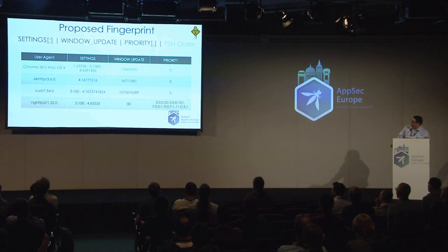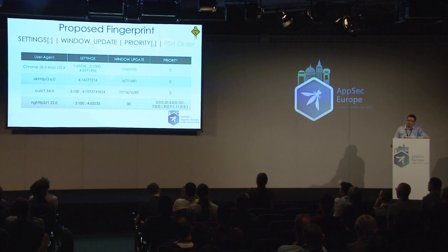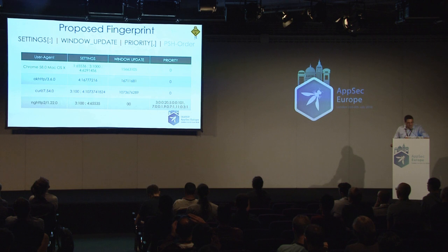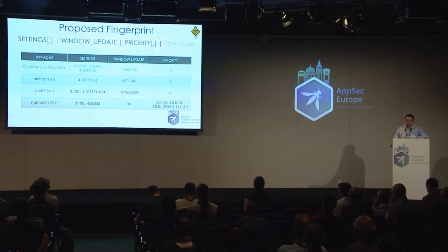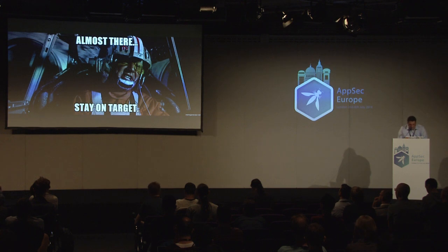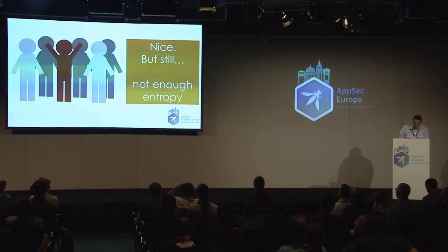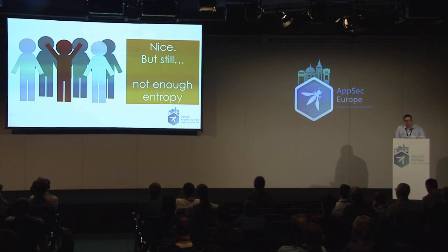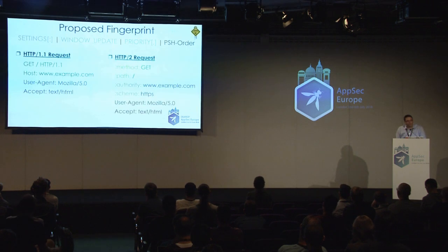We now have three elements: the settings frame, the Window Update Frame, and the priority frames — collected if the client sends them. We can already distinguish between Chrome, an OkHttp library, Chrome version 75.4 (the version that supports H2), and ngHTTP. That was really cool. But we tried one last thing to gain more entropy — pseudo headers.